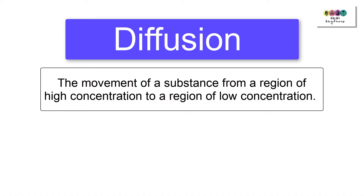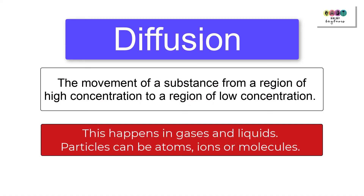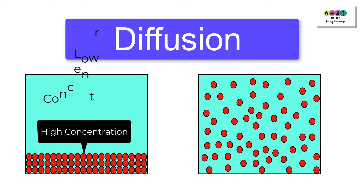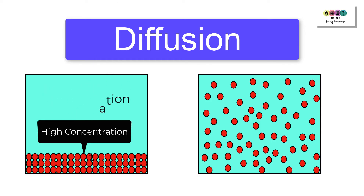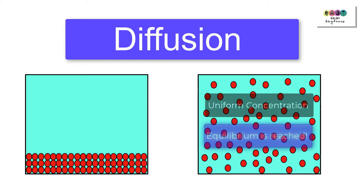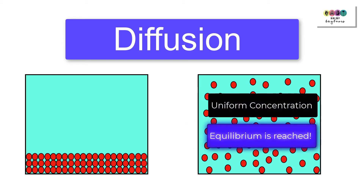Diffusion is defined as the movement of a substance from a region of high concentration to a region of low concentration. This can happen in gases and liquids, and the particles we talk about can be atoms, ions, or molecules. There will be a net movement of particles towards the area of lower concentration.